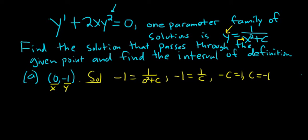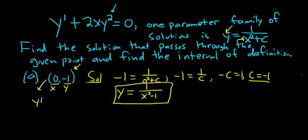We're almost there. All we have to do is plug the c back into our one-parameter family. So we get y equals 1 over x squared minus 1. So that is the solution to the DE that passes through this point. You can think of this as an initial condition, y of 0 equals negative 1.